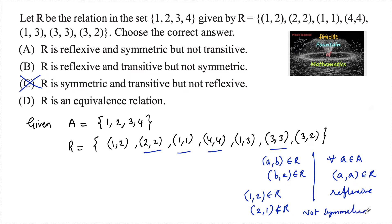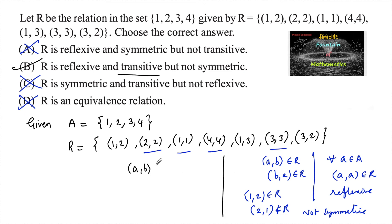Since the relation is not symmetric, we cannot say it is an equivalence relation, so option D is ruled out. Option A states reflexive and symmetric, and since it is not symmetric, option A is also ruled out. We are left with only option B, so option B will be the answer. We can also verify the transitive condition: for (a,b) in R and (b,c) in R, (a,c) must belong to R.